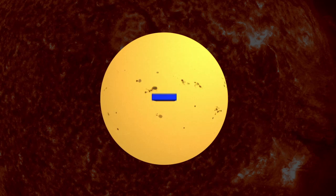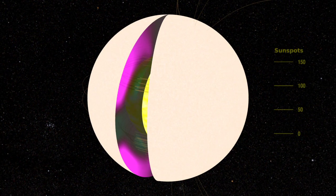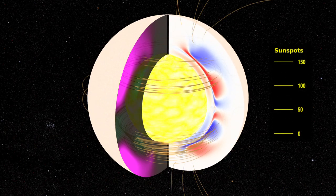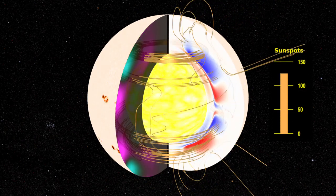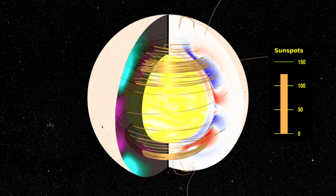So every 22 years, the poles return to the position where they started the cycle. The flip is due to the complex movement of magnetic fields inside the Sun that are constantly stretching, twisting, and crossing as solar material bubbles up from the Sun's core.